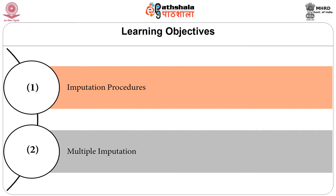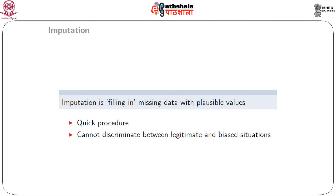In the next video, we would be showing how to apply the imputation technique or the multiple imputation technique using R. The objective here is to get an idea about imputation and multiple imputation specifically. Imputation is a quick procedure where the missing data are filled in by plausible values, which can be obtained using a variety of methods. However, imputation cannot discriminate between legitimate and biased situations, because users generally have no idea about what the missing data was — they just impute the value and proceed as if the data was not missing.